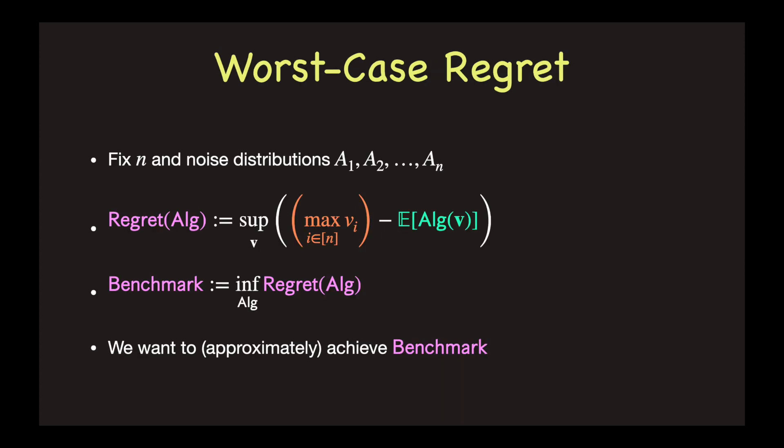Now we define the worst case regret. Fix n and the noise distributions. The worst case regret measures the performance of an algorithm in the following pessimistic way. It is the largest expected difference between the true largest value and the algorithm selection. This is taken over all possible true values. In other words, an algorithm with regret r loses at most r in expectation over random noises, compared with the clairvoyant optimal selection. We want to find the minimum possible regret, which we call the benchmark.